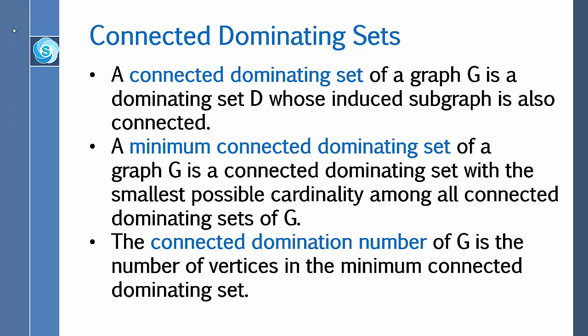A connected dominating set of a graph G is a dominating set D whose induced subgraph is also connected. An induced subgraph is a subset of vertices of a graph G together with any edges whose endpoints are both in this subset.